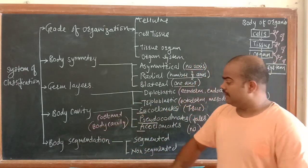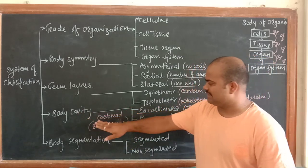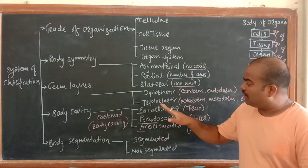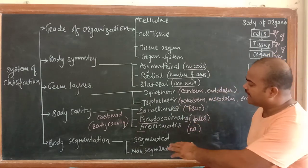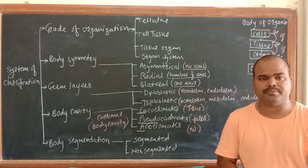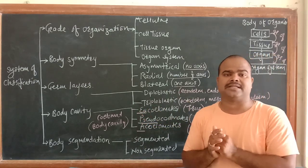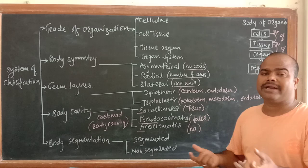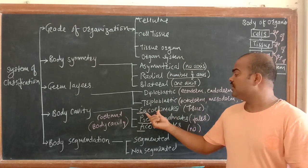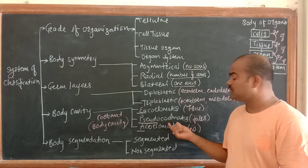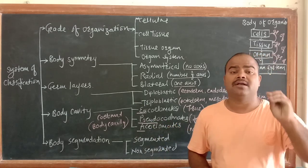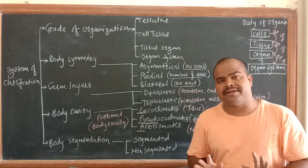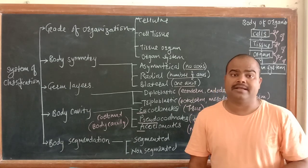The second last one is body cavity, also known as coelom. Coelom means body cavity. On the basis of body cavity, organisms are divided into three types: acoelomate, pseudocoelomate, and coelomate. Animals showing coelom are coelomate.